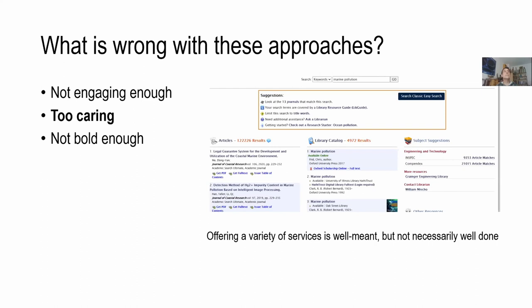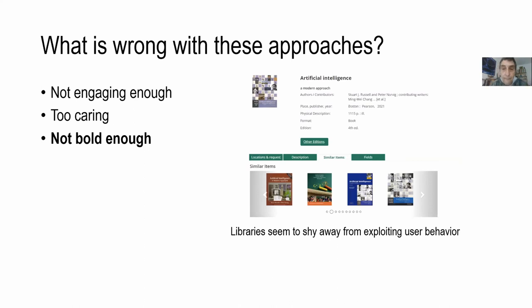There was a talk — I think in the spring — with Lorcan Dempsey and a colleague from the University of Illinois or somewhere in the Midwest, and they found out that the bento boxes weren't used that well at all. The main scenario for usage was still the known item search with the discovery system, which was quite disappointing.